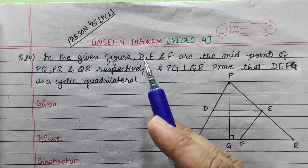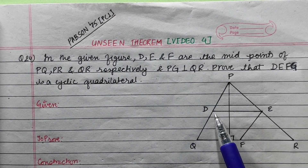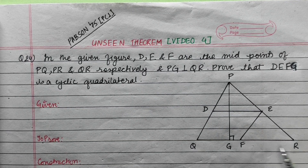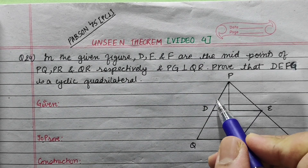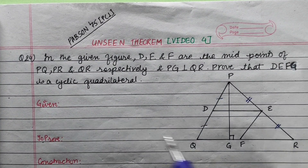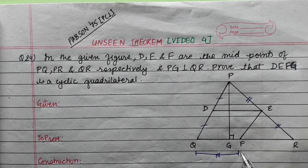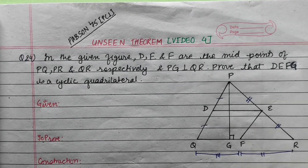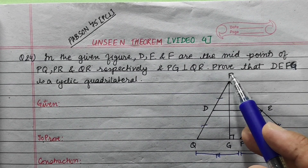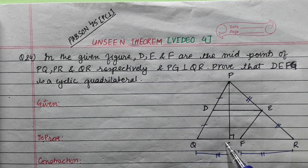I am going to be on this theorem. In this theorem, I am going to answer the question. In the given figure, D, E, F are midpoints of PQ, PR, and QR respectively. D is the midpoint of PQ, E is the midpoint of PR, and F is the midpoint of QR. If PG is perpendicular to QR, prove that DEFG is a cyclic quadrilateral.